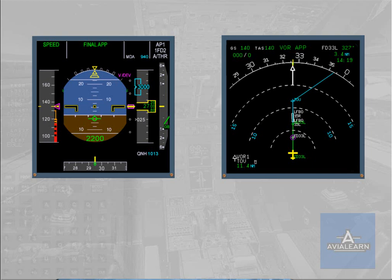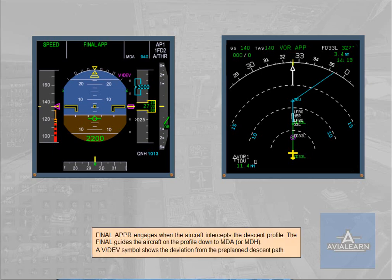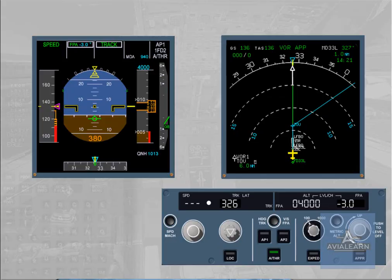The final approach guides the aircraft on the profile down to MDA or MDH. A VDEV symbol shows the deviation from the pre-planned descent path. The final approach disengages if heading, vertical speed, or track flight path angle modes are engaged, or if the pilot pushes the LOC push button. The final approach mode disengages and the autopilot disconnects when reaching MDH or MDA minus 50 feet, or 400 feet above ground level if MDH or MDA was not entered.